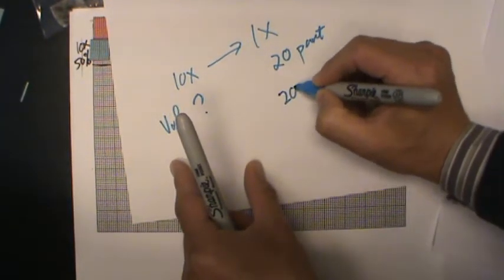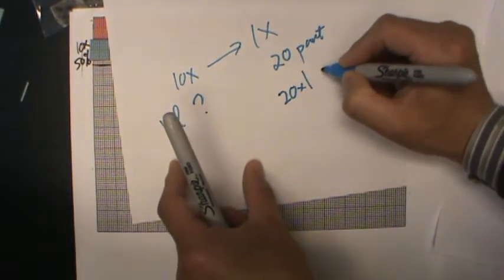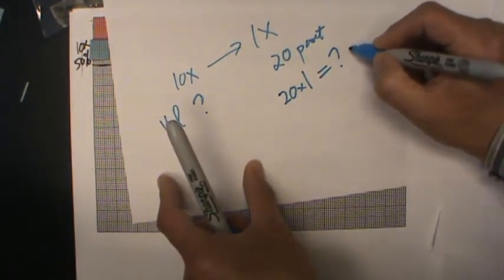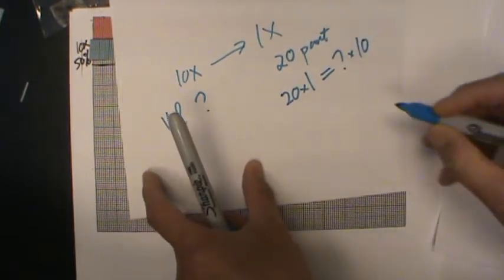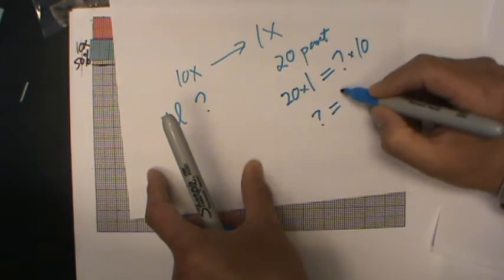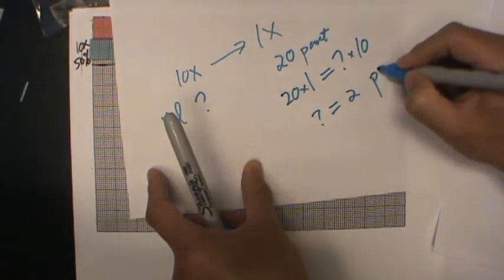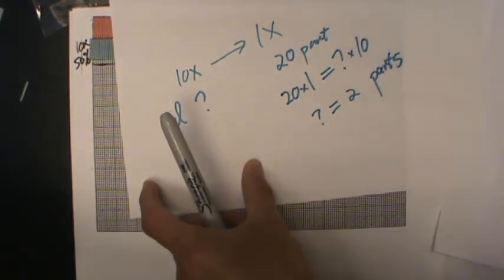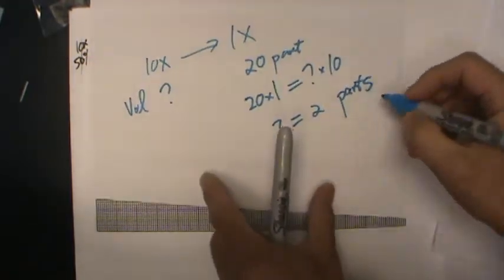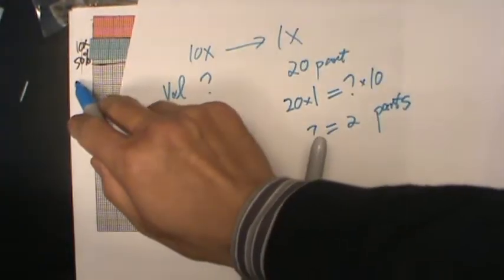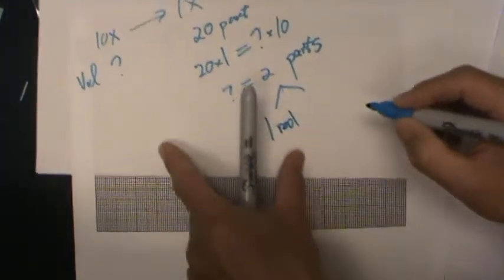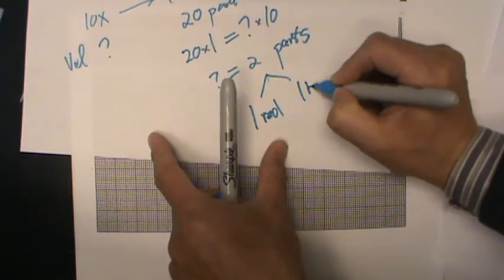So we can solve this conservation of mass. So we know 20 parts, which is 1x, should be equal to the same volume in the 10x part. And then we can solve how much volume. We can find this is 2 parts. So among these two parts, we know that's 50% concentrated. So among these ones, one part is red, and one part is blue.